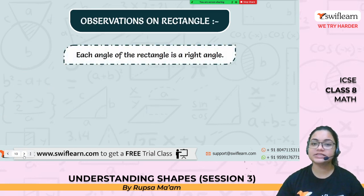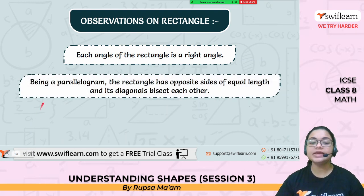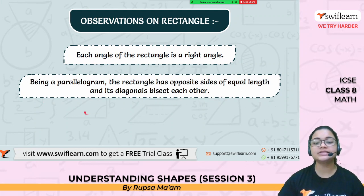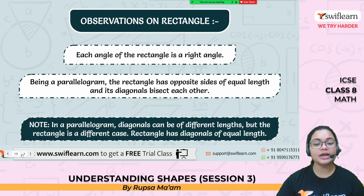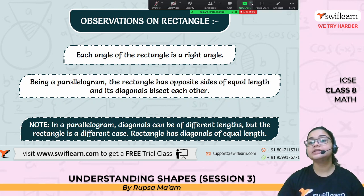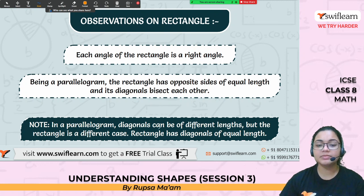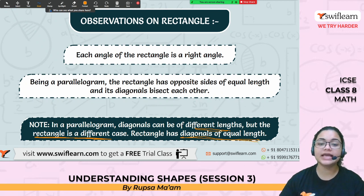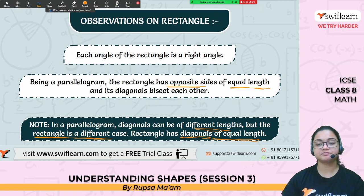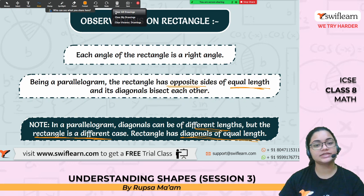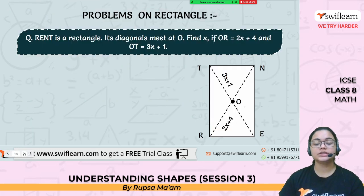Observation of rectangle: each angle of the rectangle is a right angle. Being a parallelogram, the rectangle has opposite sides of equal length and its diagonals bisect each other. In a parallelogram, diagonals can be of different lengths, but the rectangle is a different case. Rectangle has diagonals of equal length. These points are very much important. Rectangle is a parallelogram, so its opposite side lengths are equal. These two points are very important for the rectangle.